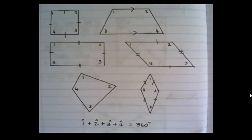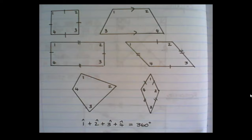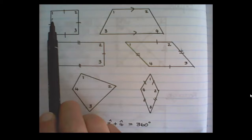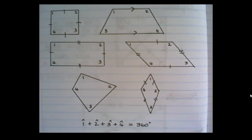A useful tip for grade 10 is that regardless of what type of quadrilateral you have — and remember a quadrilateral is a figure with four sides — whether you have a square, a trapezium, a parallelogram, a rhombus, a rectangle, a kite, or something that's oddly shaped, all four angles on the inside of any quadrilateral will add up to 360 degrees.